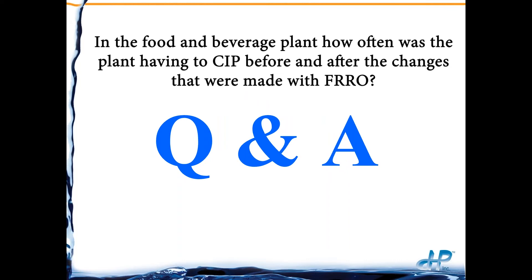A note about CIP: since we already have the system of pipes and valves installed, we can conduct CIP on part of the RO system while the rest is still working — taking advantage of the additional valves and pipes. The bottom line is less CIP frequency, and we learn the exact timing as we work with the system in the field.